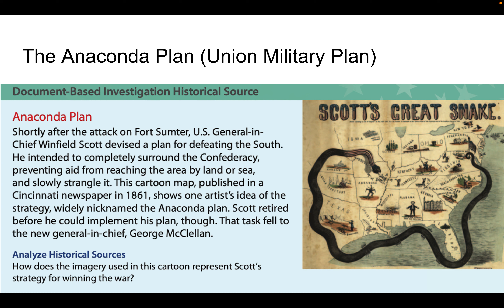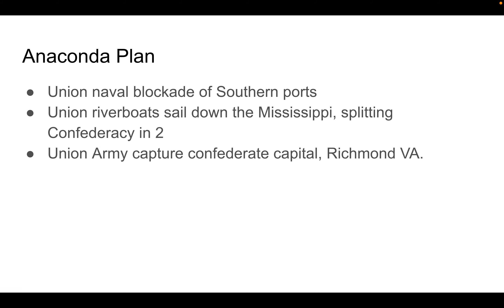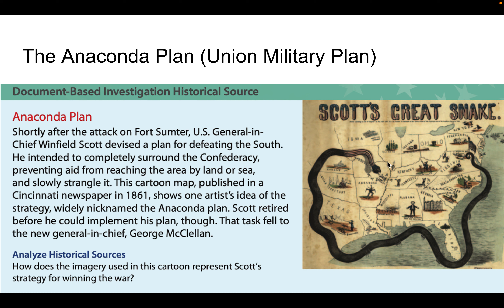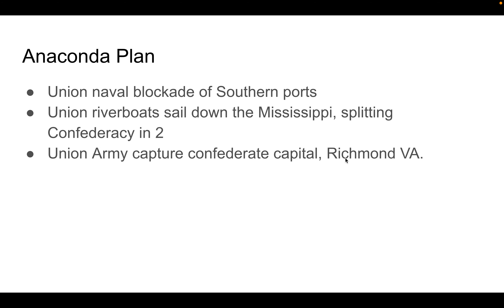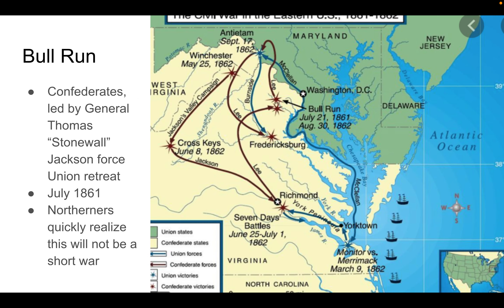Just like an anaconda, as the political cartoon on the right shows, the goal was to encircle the Confederacy and strangle them. There were three parts: first, a naval blockade of southern ports like Charleston or New Orleans; second, Union riverboats sailing down the Mississippi to split the Confederacy in two, blocking off states like Arkansas, Texas, and Louisiana from Mississippi, Alabama, and Tennessee; and third, capturing the Confederate capital, Richmond, Virginia, near the York Peninsula.